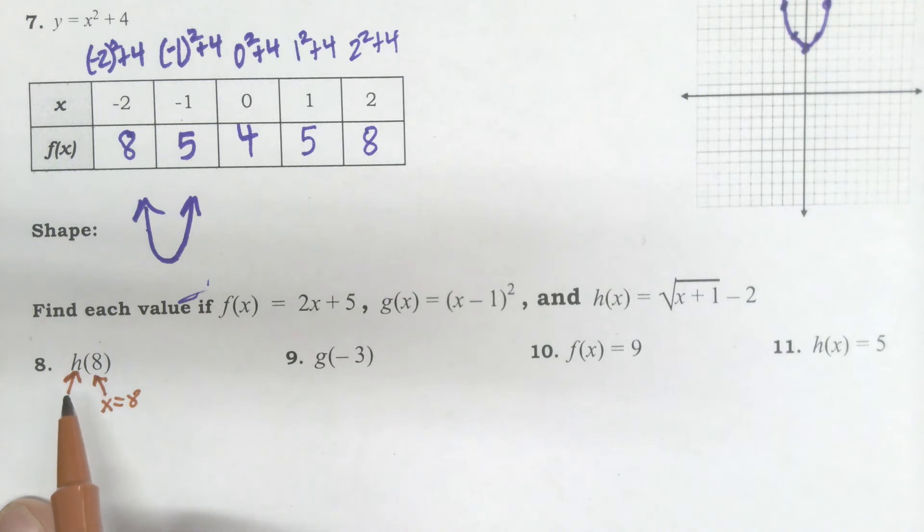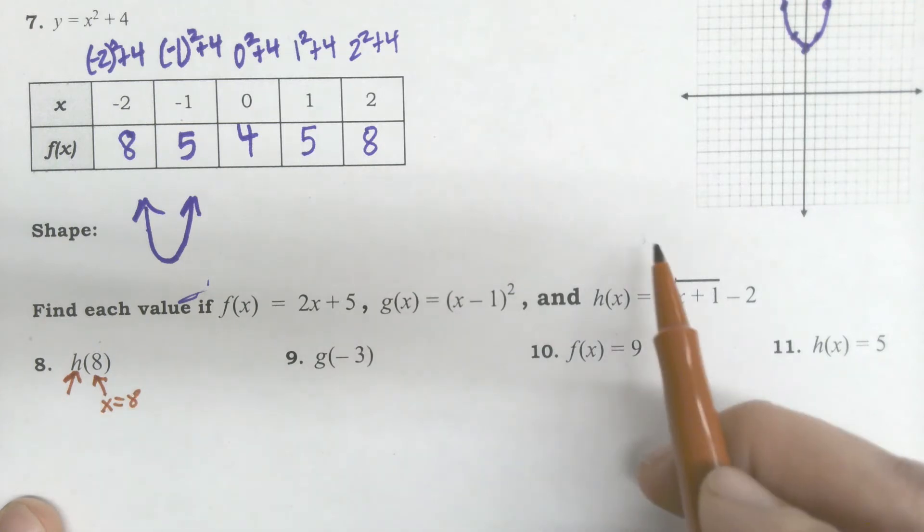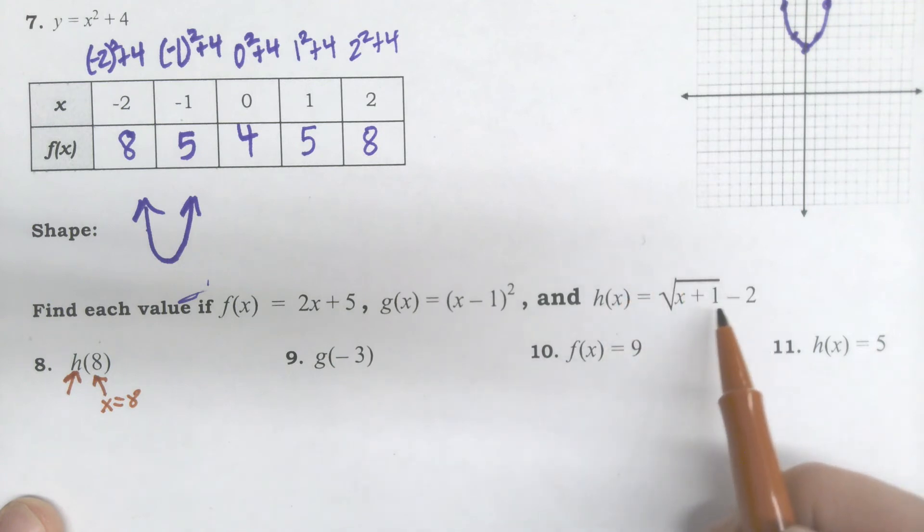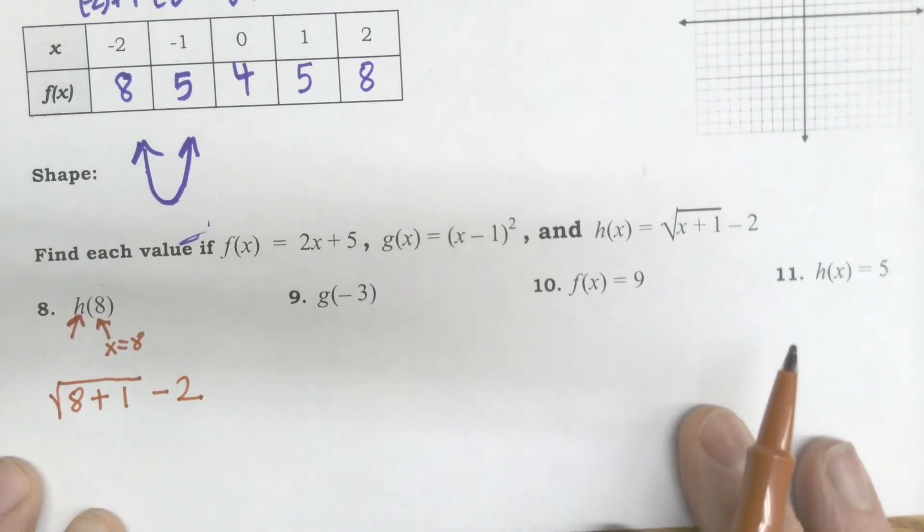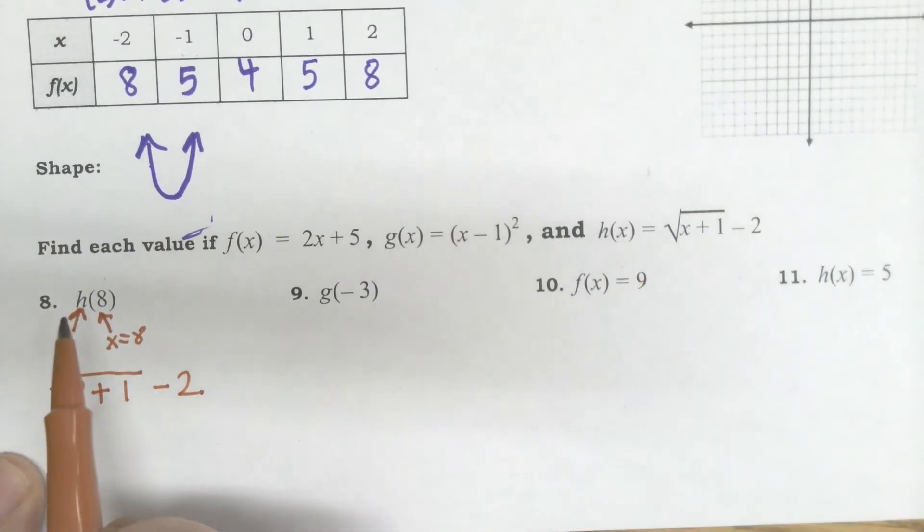When we're dealing with functions, what this tells me is I am going to use the H function. And for X, I'm going to plug in 8. So I'm going to go to the H function and plug in 8. So I'll go over here as the H function. I'm going to do the square root of not X split, but 8 plus 1 minus 2.